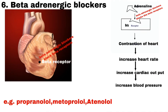Number 6 is Beta Adrenergic Blockers. Beta receptors are present in the cardiac muscle cells in the heart. Adrenaline, which is secreted from the adrenal gland located on the kidney, can combine with the beta receptor on the cardiac muscle and contract the heart more rapidly. Because of that, heart rate will increase and blood pressure increases. So beta blockers block these beta receptors and can reduce blood pressure.